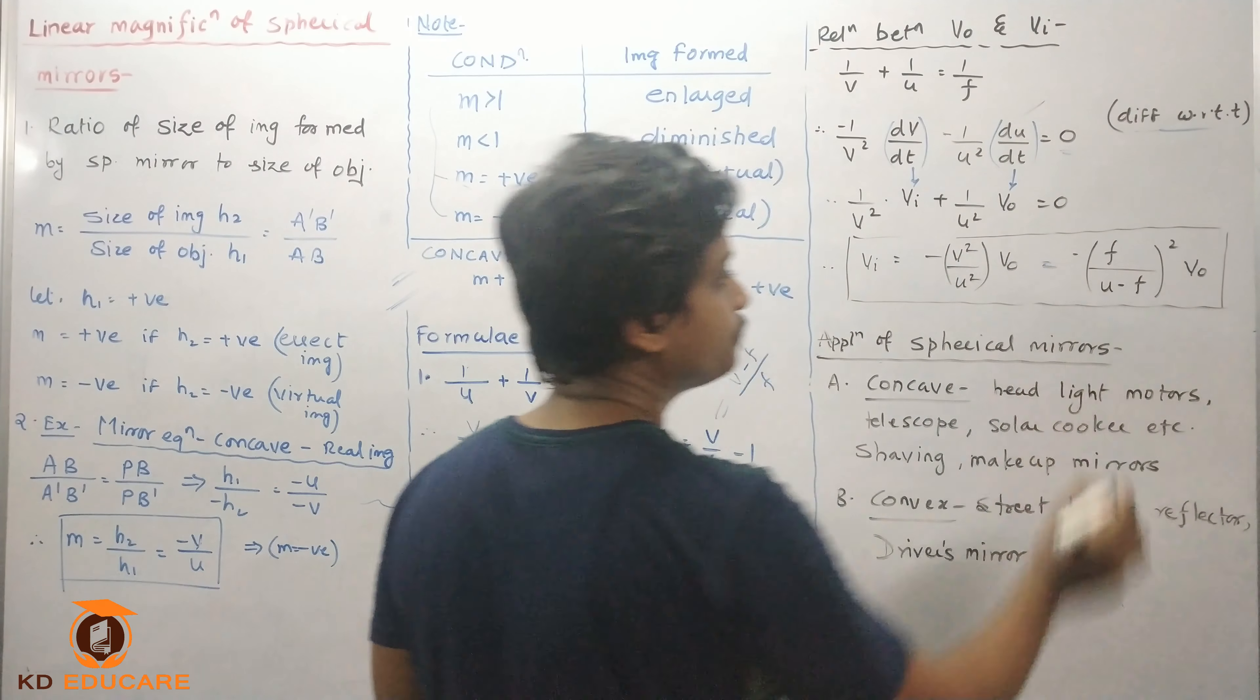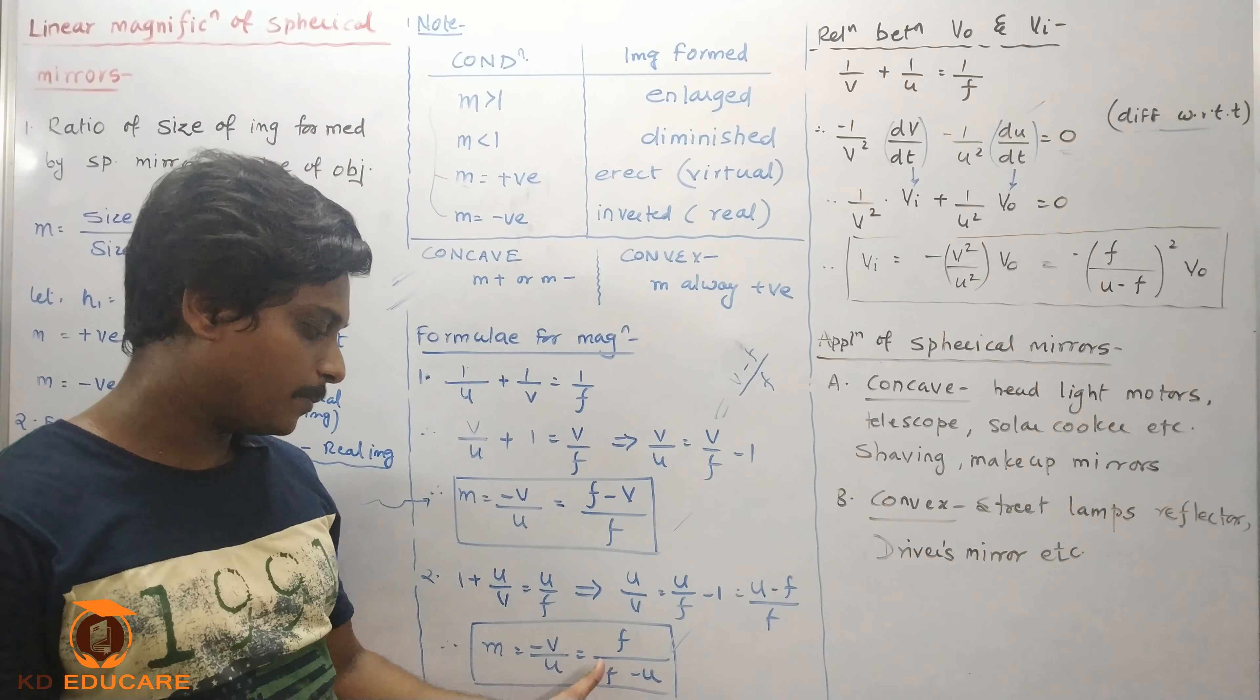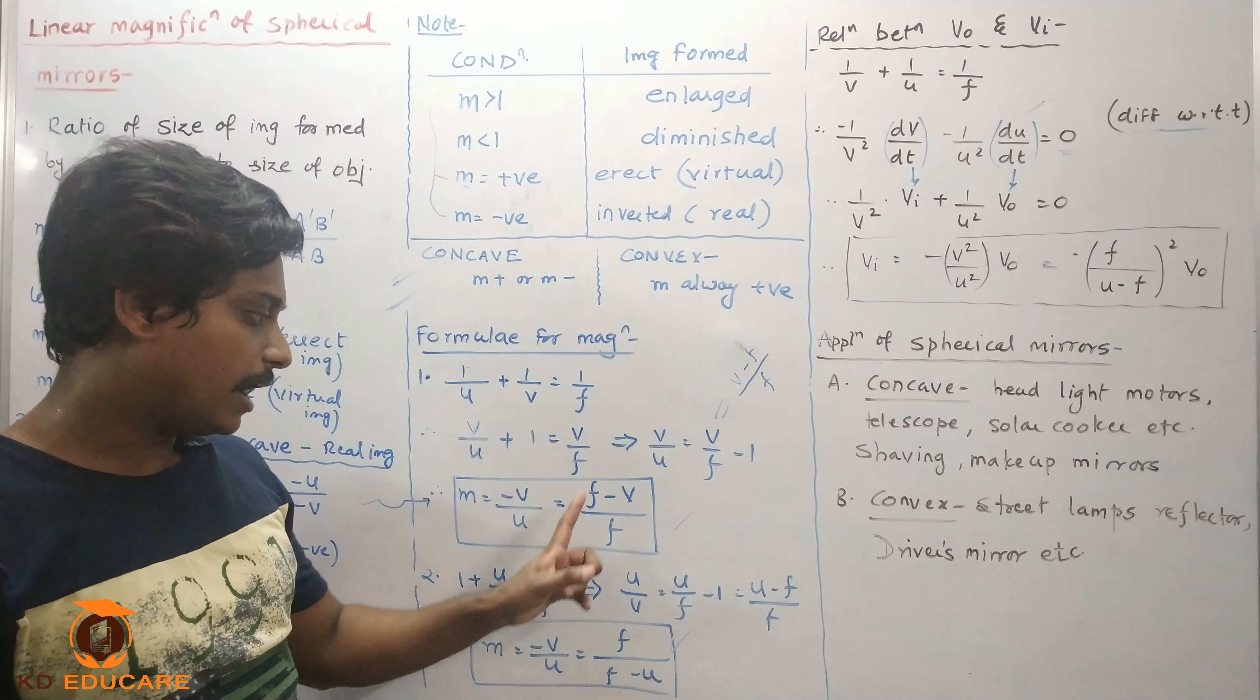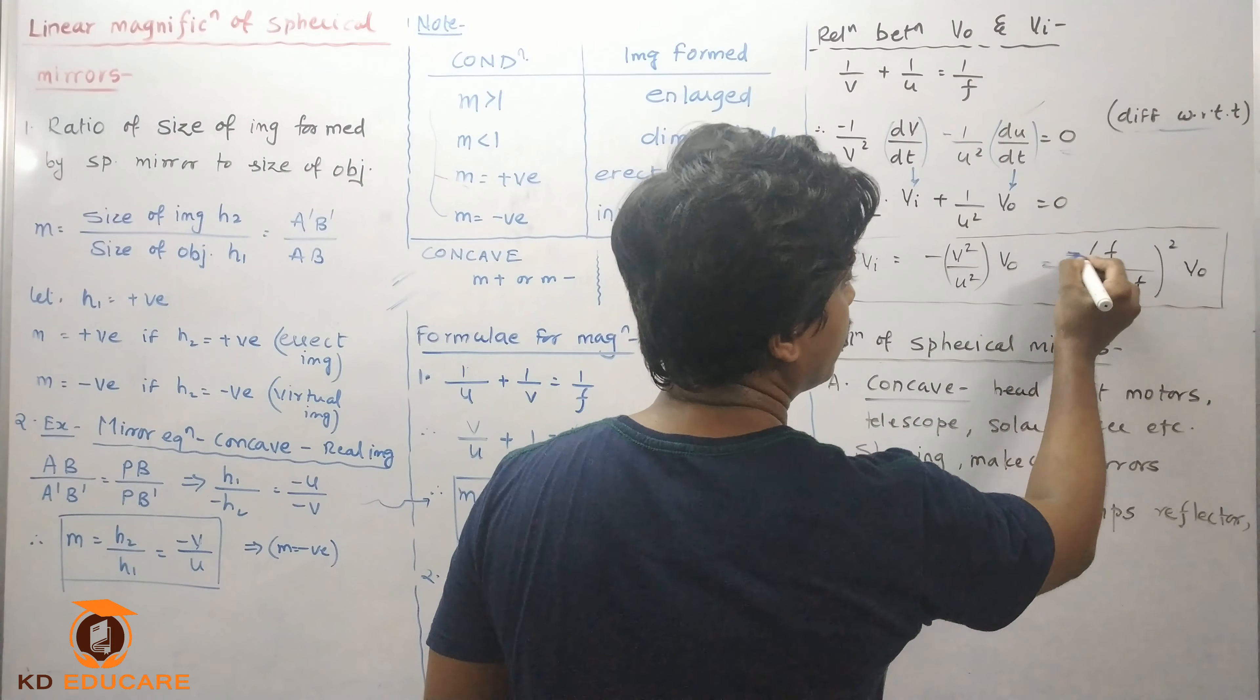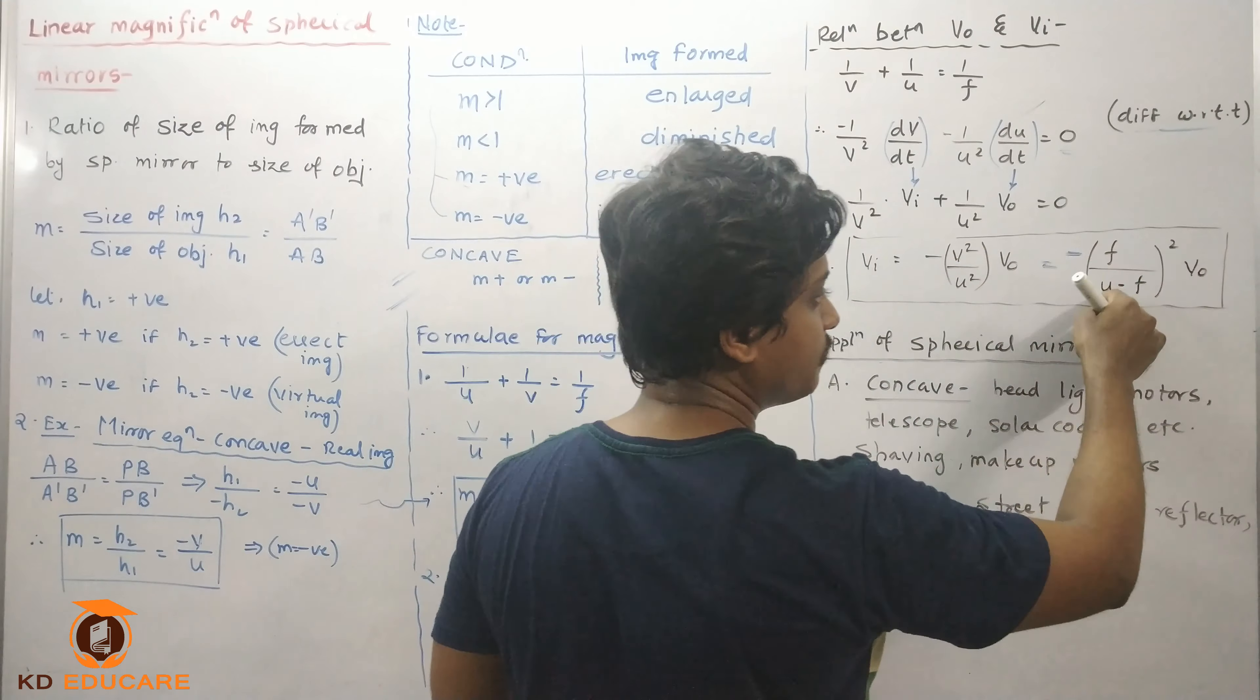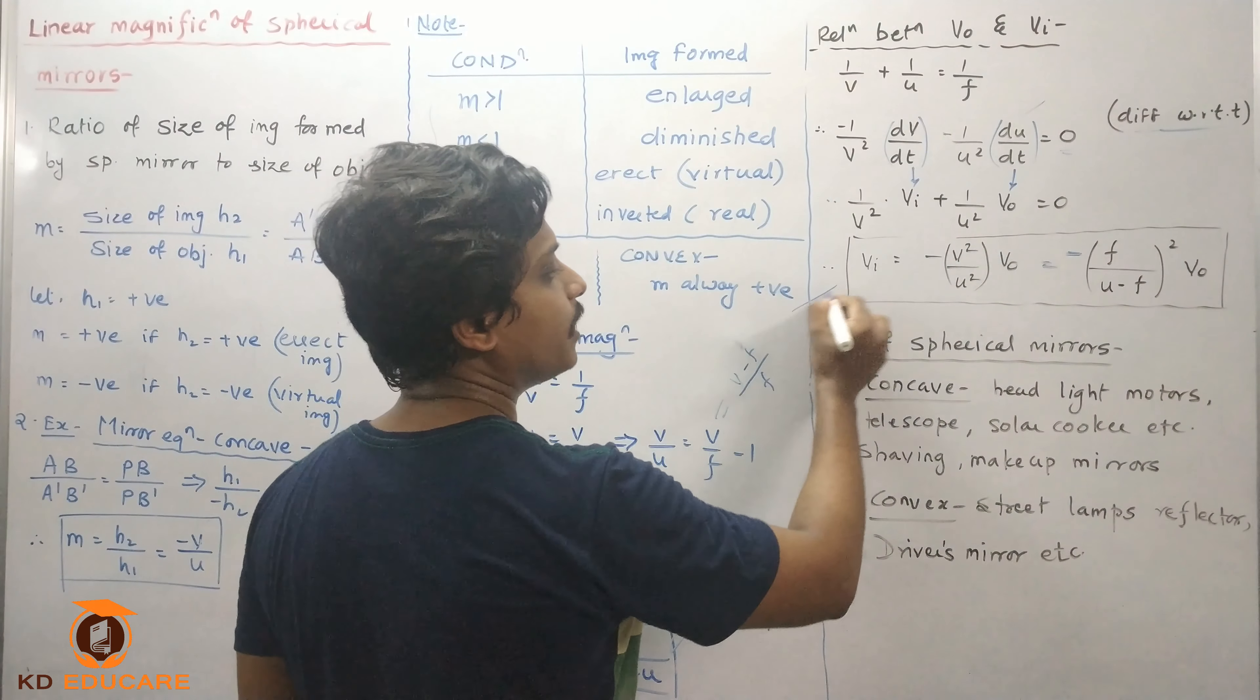It's simple, if I have a distance to differentiate then it's done. So 1 upon v plus 1 upon u equal to 1 upon f. This equation we have to differentiate with respect to time. So 1 upon v minus 1 upon v square dv upon dt, 1 upon u minus 1 upon u square du upon dt. Since f is a constant, answer is 0.